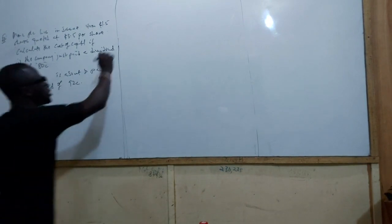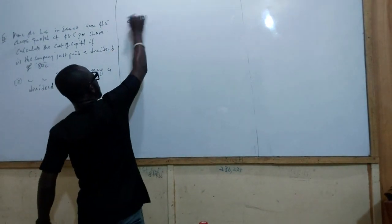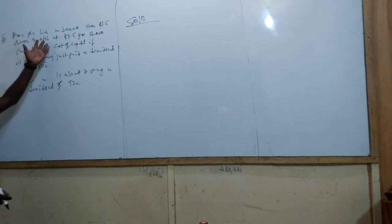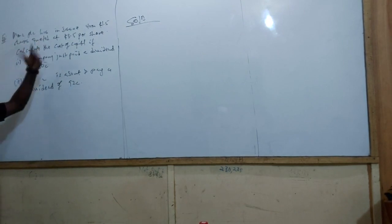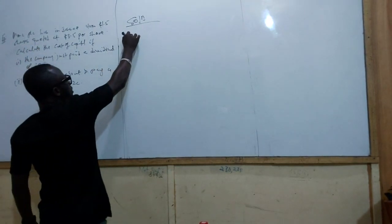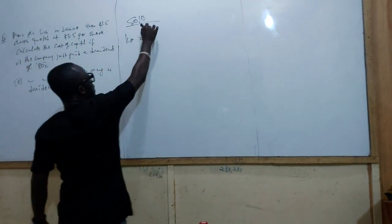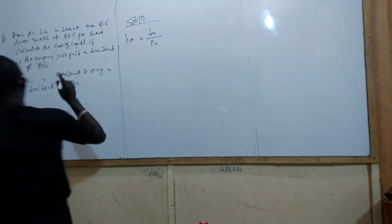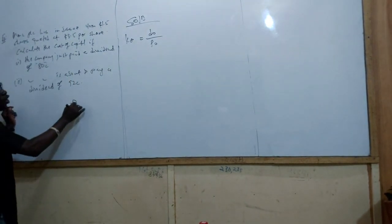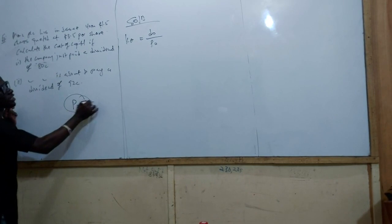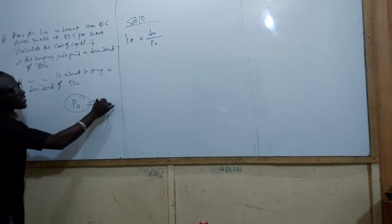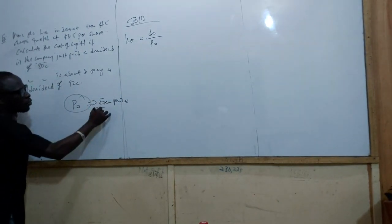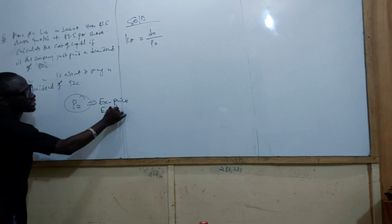From this question, there is no growth language inside. Hence, we will just go straight that KE equals D0 over P0. But remember, the P0 we are interested in has to be the ex-dividend price, also called XDIV — it must exclude the dividend.